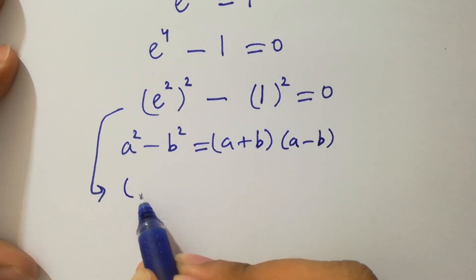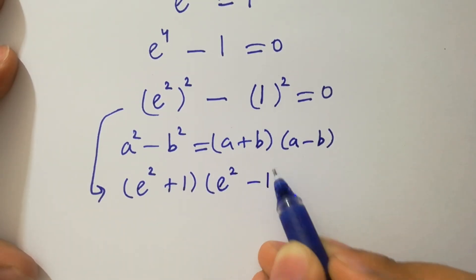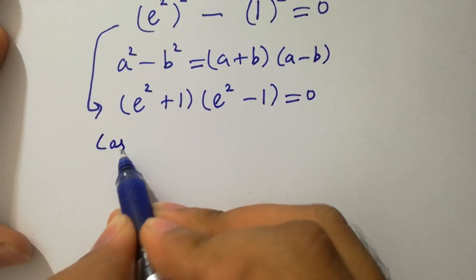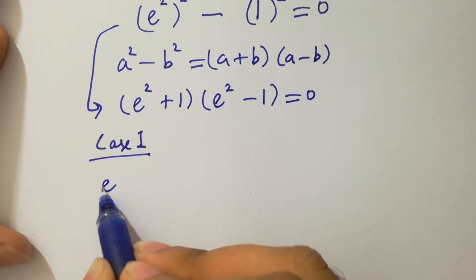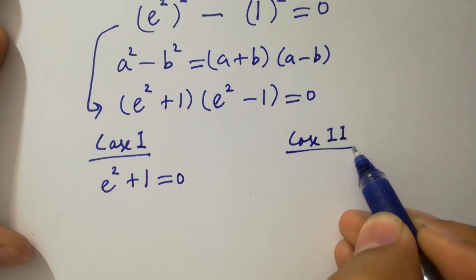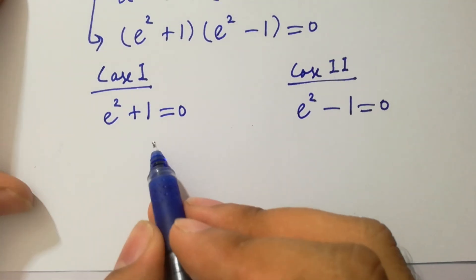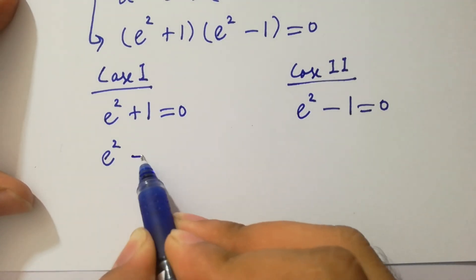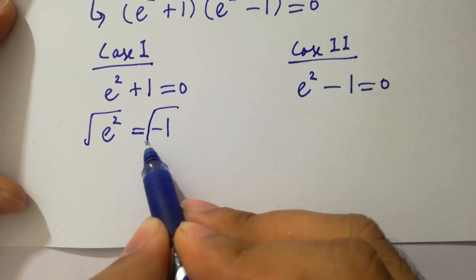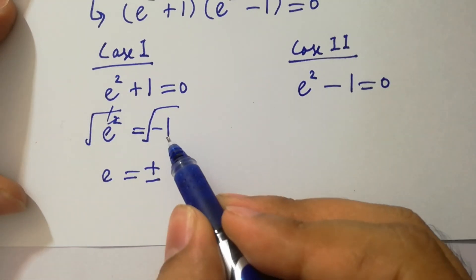It becomes e squared plus 1 times e squared minus 1 equals 0, giving us two cases. Case 1: e squared plus 1 equals 0. From this, e squared equals minus 1. Taking the square root on both sides, e equals plus or minus the square root of minus 1, which is i.